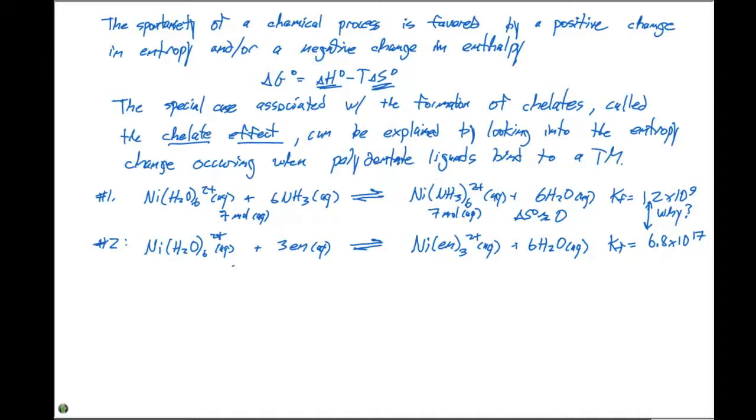For reaction number two, on the reactant side we have four moles of aqueous ions in solution. On the product side, we have seven moles of aqueous ions. When we go from four moles to seven moles, the standard entropy is going to increase. If our entropy increases, that's going to make our delta G more negative.